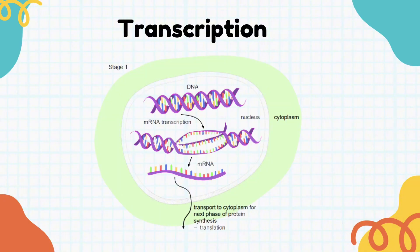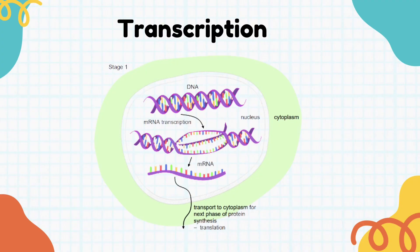What will happen first is that, similar to DNA replication, the DNA will unwind. As it unwinds, the weak hydrogen bonds between the nitrogenous bases will break, which results in it basically unzipping. You then have two separate strands, but one strand will act as a template to form a complementary strand which we call messenger RNA. This strand will carry the message from the nucleus — basically the instructions for how the protein needs to be built.